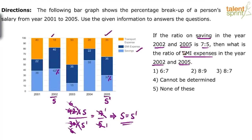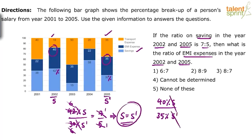Now he's asking for EMI expenses. How much did he spend on EMI in 2002? 40%. How much in 2005? 35%. So the ratio is 40% of S to 35% of S'. Since S and S' are equal, they cancel out. We're left with 40/35, which simplifies to 8/7. So the ratio is 8:7. Option 3 is the answer.